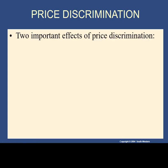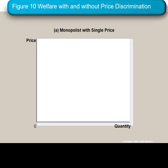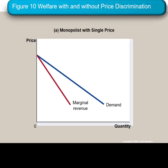The outcome of price discrimination has two important effects: it increases the monopolist's profit and reduces deadweight loss. That might seem strange, because usually when a monopolist earns more profit, it reduces the quantity available and generates more deadweight loss. For a single price monopolist, the outcome is profit for the monopolist — assuming no fixed costs.